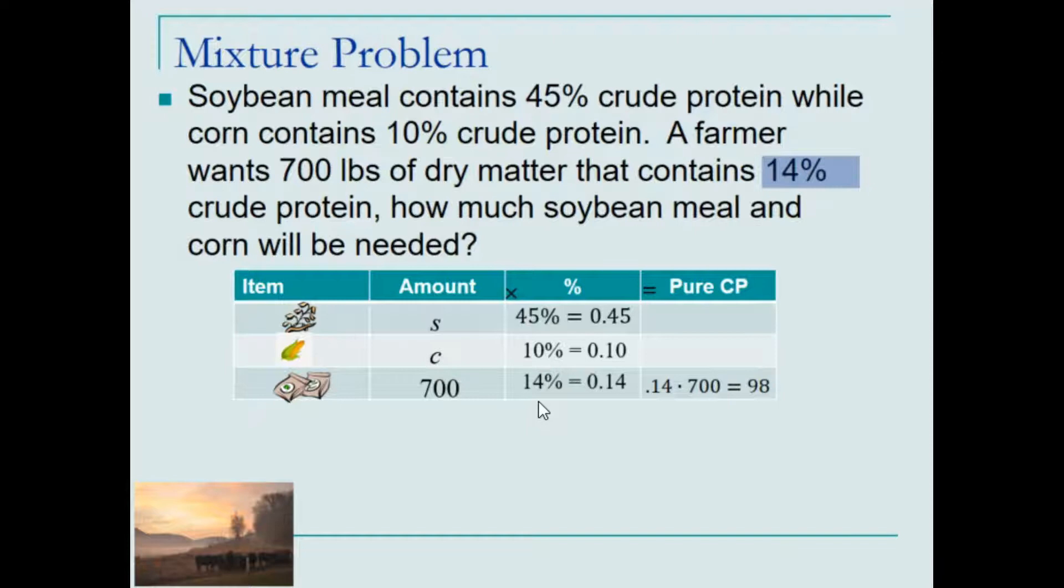To fill in the pure crude protein for soybeans, we'll take 45% of the total weight of soybeans, which is represented here: 0.45s. And likewise, we'll take the percentage crude protein times the total weight for the corn.